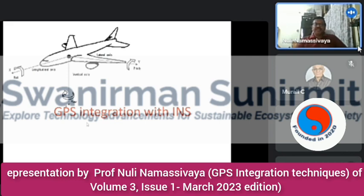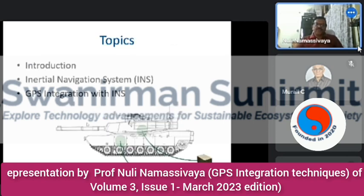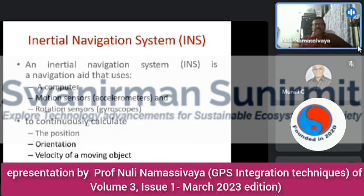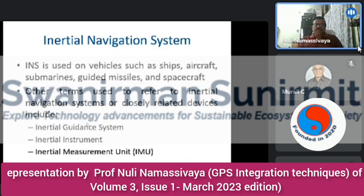The next category is GPS integration with INS — Inertial Navigation System. An Inertial Navigation System is a navigation aid that uses a computer and motion sensors like accelerometers and rotation sensors like gyroscopes to continuously calculate the position, orientation, and velocity of a moving object. INS is used on vehicles such as ships, aircraft, submarines, guided missiles, and spacecraft. Related terms include Inertial Guidance System, Inertial Instrument, and Inertial Measurement Unit.